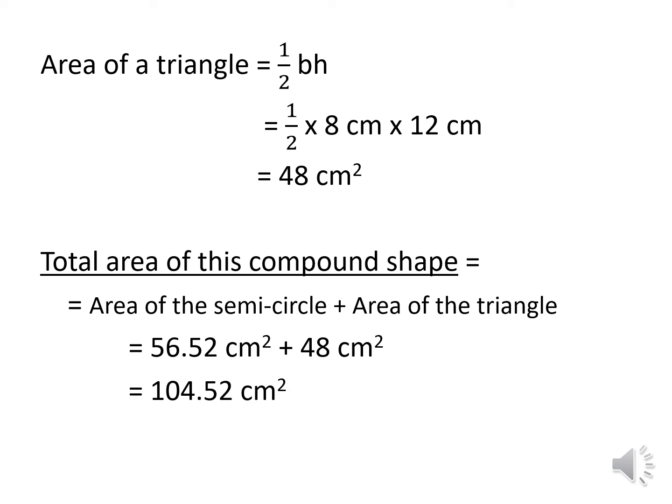We have a semicircle and a triangle. We found the area of the semicircle and the area of the triangle, added them together, and found the total area of the compound shape. Remember the formulas: the area of a circle is pi r square; for a semicircle it is half, so 1 over 2 times pi r square. And the area of a triangle is half base times height — half b h, base times height.